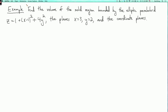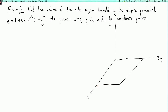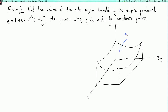Let's first sketch this region to get an idea of what we're supposed to do. So here are the axes. Here's the plane y equals 2, and here's the plane x equals 3, and then we have the paraboloid. The important thing about this paraboloid is that z is always positive — in fact, z is always greater than or equal to 1, because it's 1 plus the sum of squares. So the paraboloid is above the x-y plane, and we're finding the volume under this graph. On top, we have the paraboloid z equals 1 plus x minus 1 squared plus 4y squared.